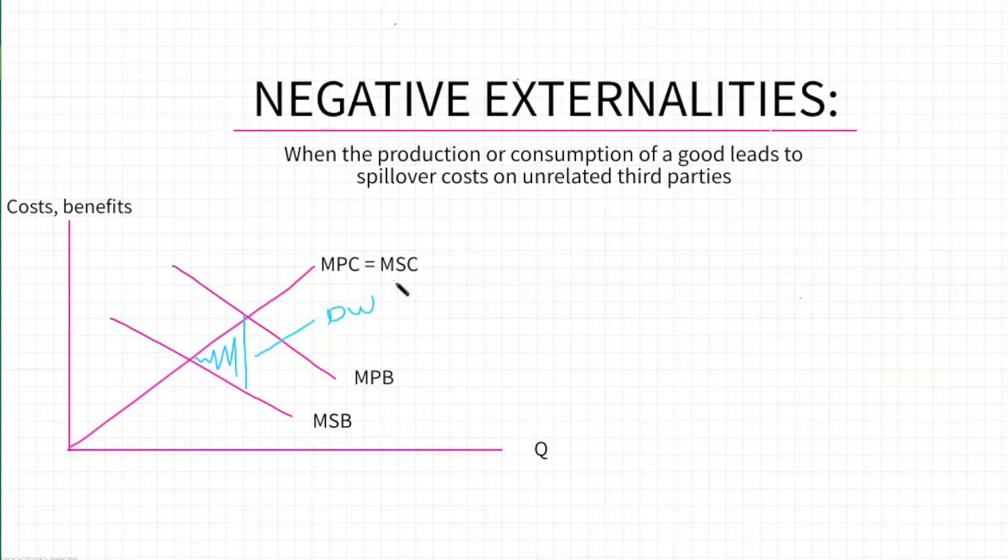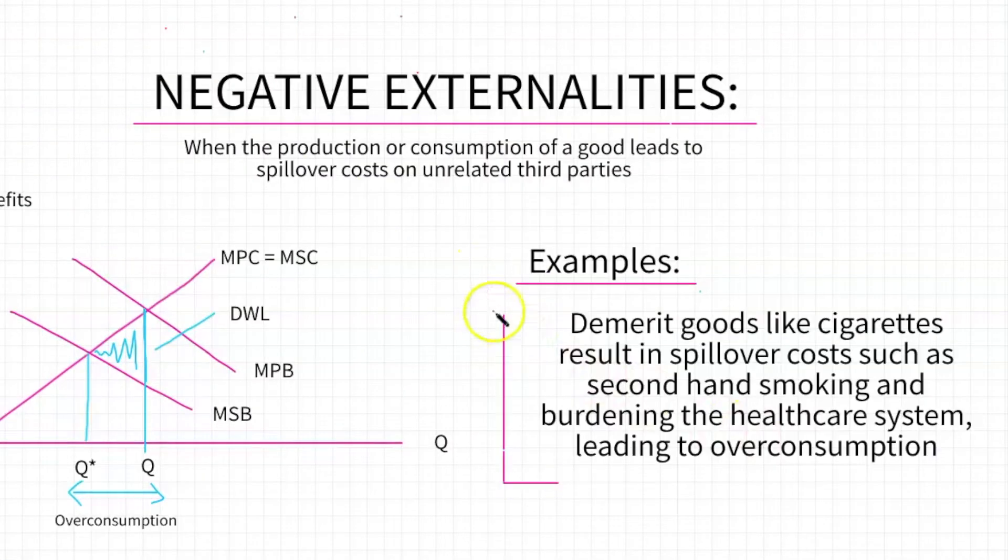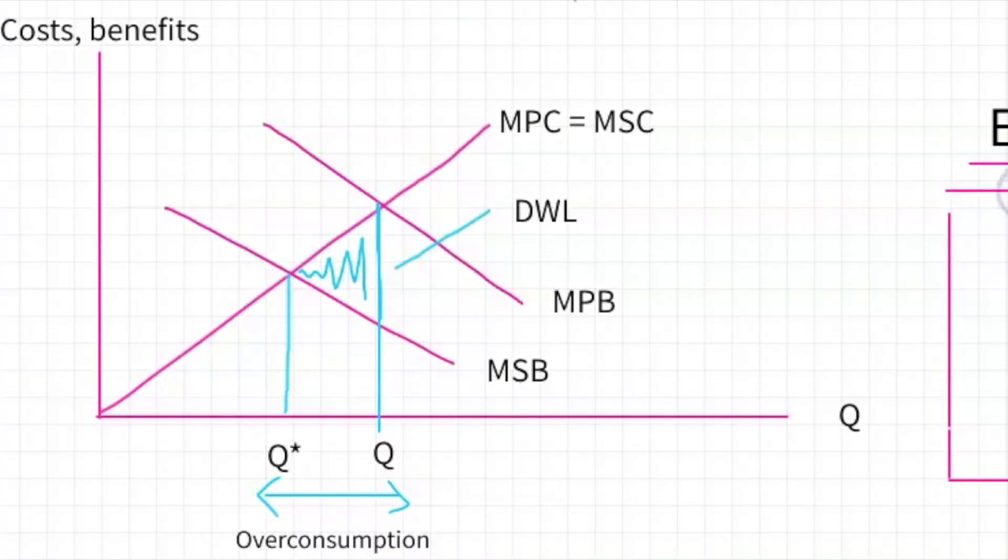In other words, the private benefits of an individual consuming this good is greater than the benefits to society of you consuming this good. Negative externalities of consumption always happen in the case of demerit goods, things like alcohol or cigarettes, where it may be beneficial for you individually to smoke a cigarette or to drink a beer. We say that it is not as beneficial to society due to the associated healthcare burden costs, air pollution, secondhand smoke, etc. This leads to the divergence between MPB and MSB and that creates a deadweight loss and an overconsumption. And that's how you would draw the diagram in a paper.